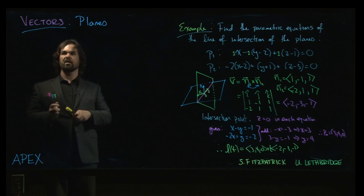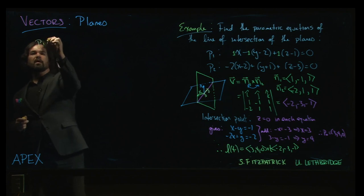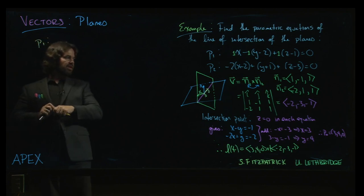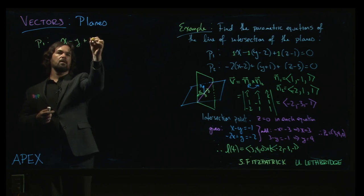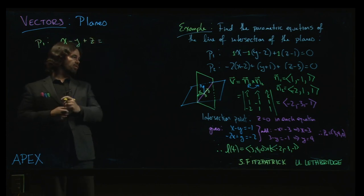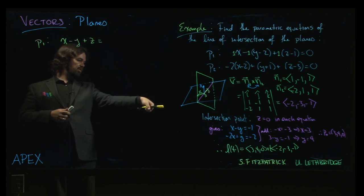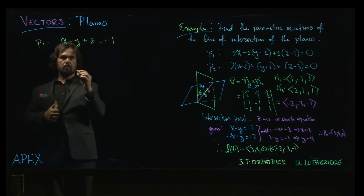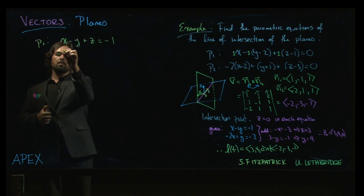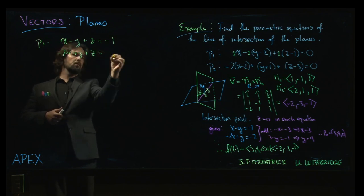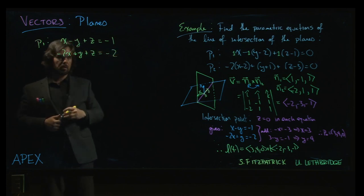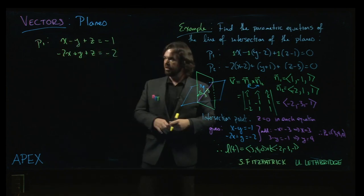So the other way we can do this is we rewrite the two equations in this so-called general form. So we rewrite x minus y plus z, move the constants over, so it's minus 1. And then it's going to be minus 2x plus y plus z equals minus 2. That's the second plane.